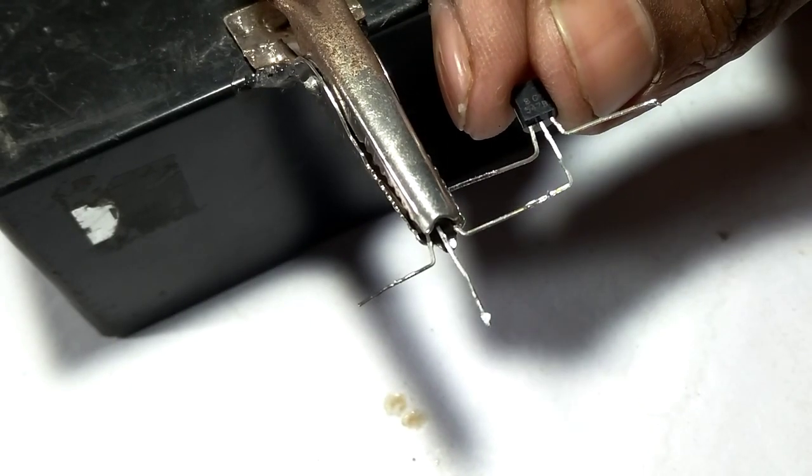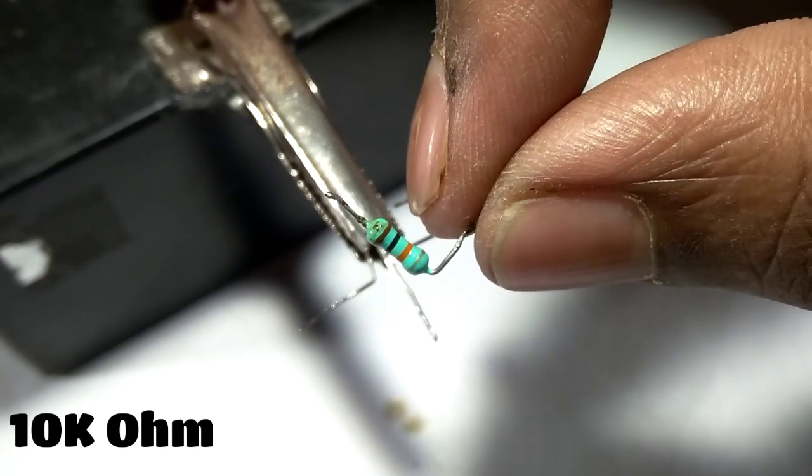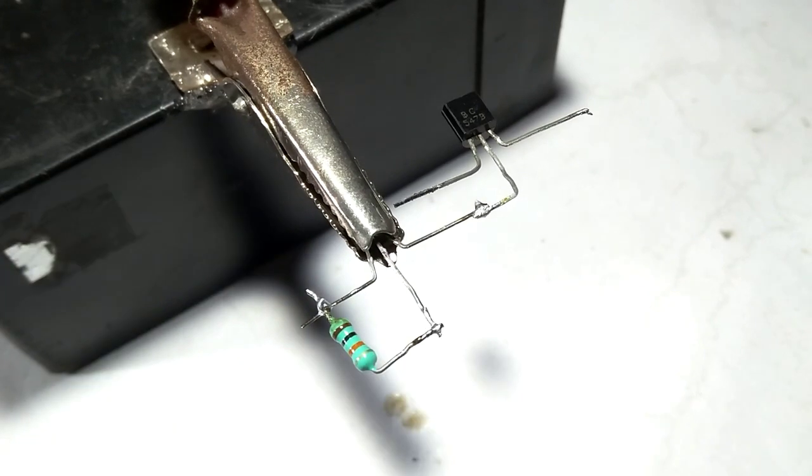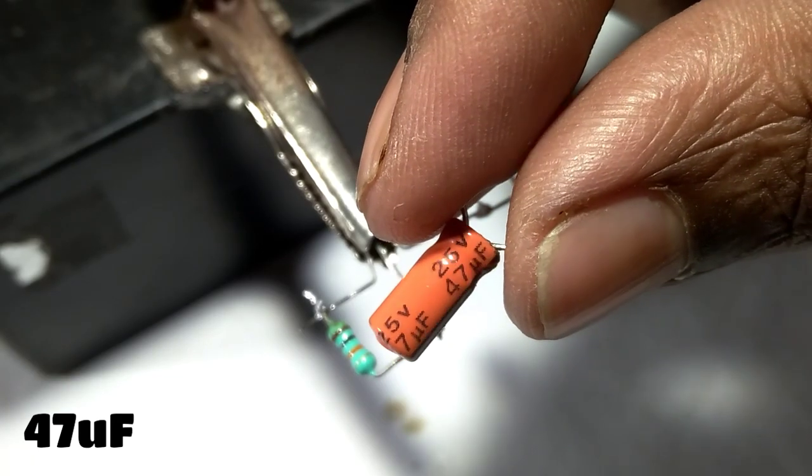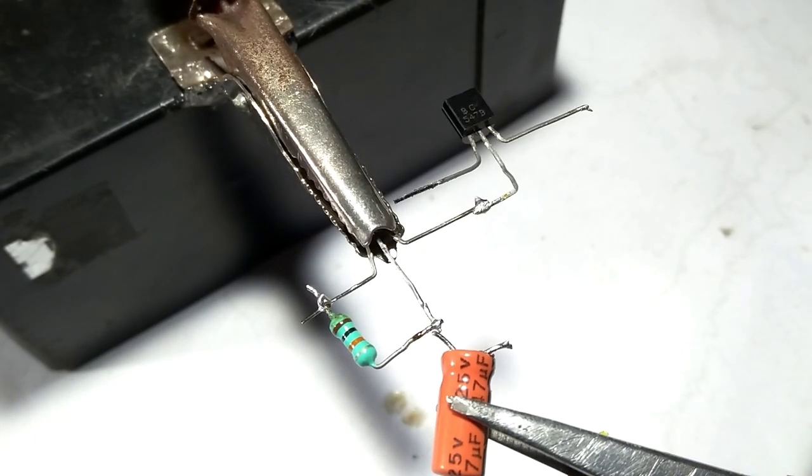Then I need a 10 kilohm resistor and connect it between one transistor base and collector pin. Then I need a 47 microfarad capacitor and connect it to the base pin of one transistor.